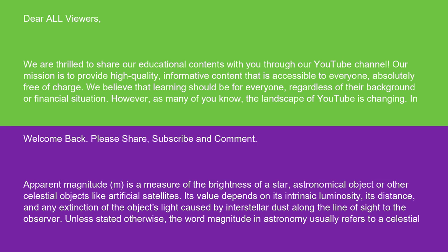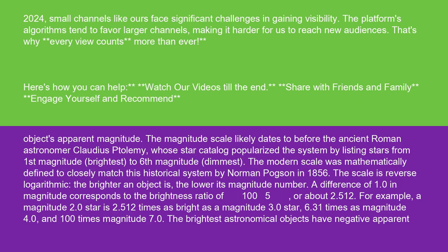Unless stated otherwise, the word magnitude in astronomy usually refers to a celestial object's apparent magnitude. The magnitude scale likely dates to before the ancient Roman astronomer Claudius Ptolemy, whose star catalog popularized the system by listing stars from 1st magnitude (brightest) to 6th magnitude (dimmest).